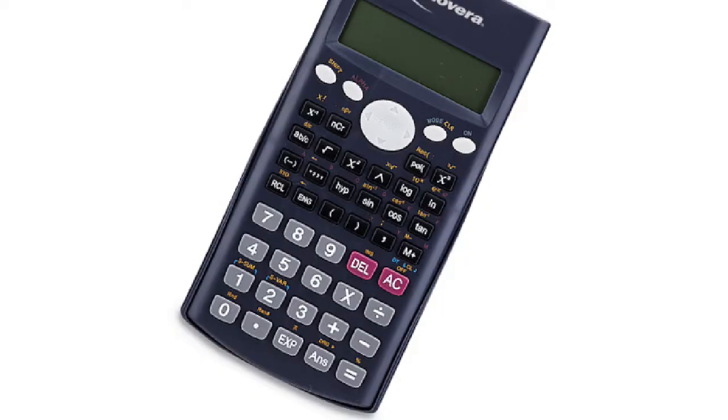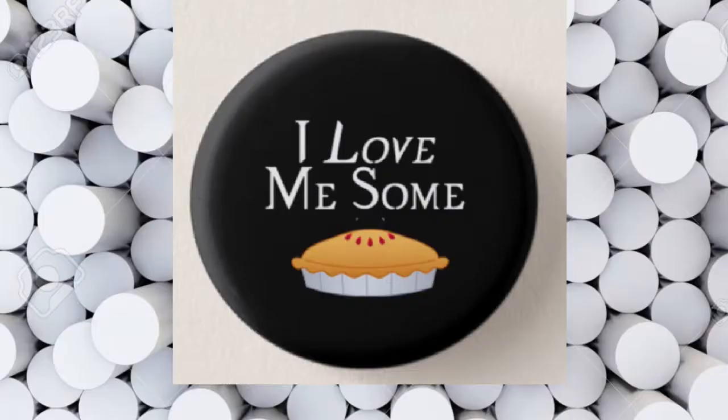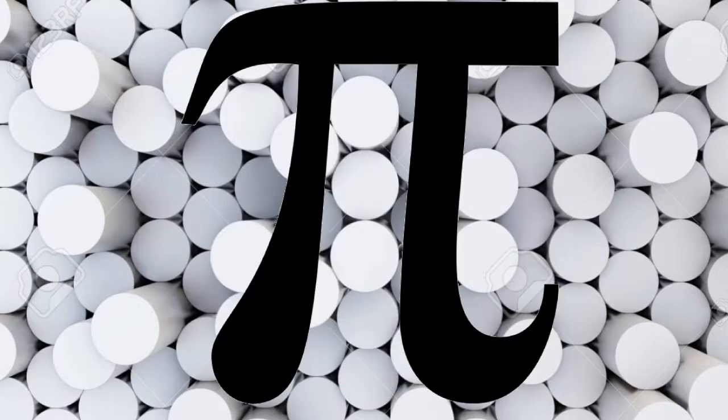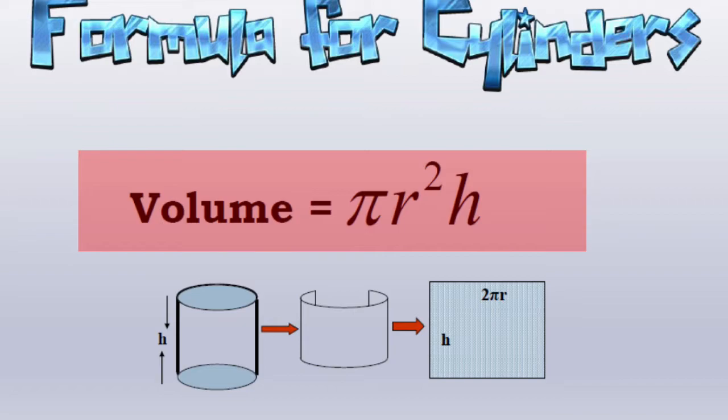If you're using a calculator for your formulas with circles, your calculator may have the pi button on it. The button on the calculator would look like this. So let's go back to the formula. If we multiply our three values together, we'll get our answer for volume.